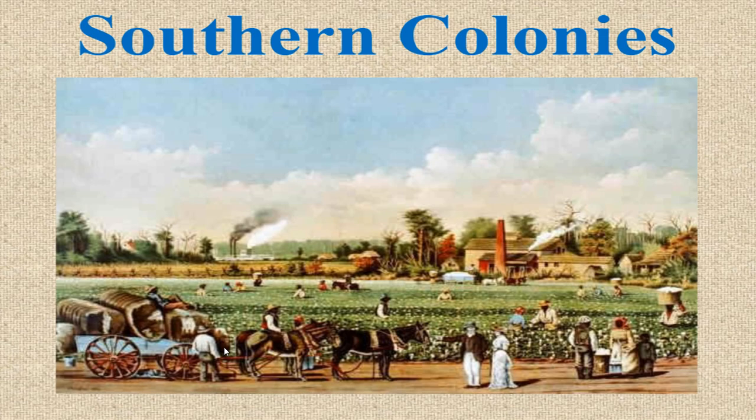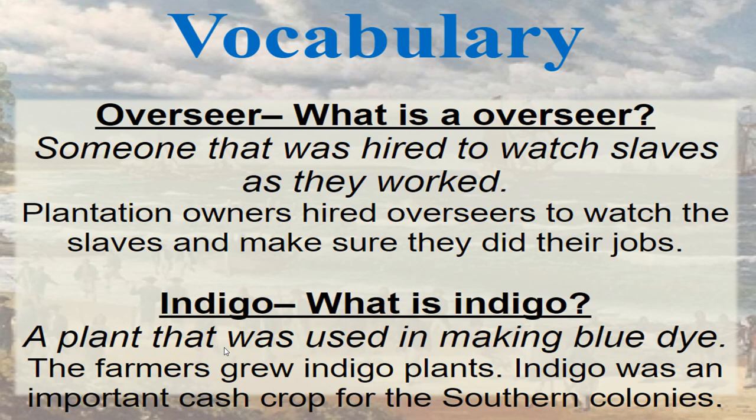Now let's take a look at the southern colonies. The vocabulary word is overseer: someone hired to watch slaves as they worked. Plantation owners hired overseers to watch the slaves and make sure they did their jobs. Another vocabulary word is indigo — a plant that was used in making blue dye. The farmers grew indigo plants, and it was an important cash crop for the southern colonies.